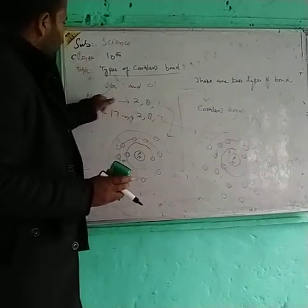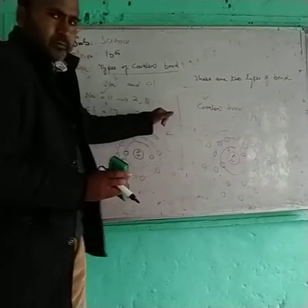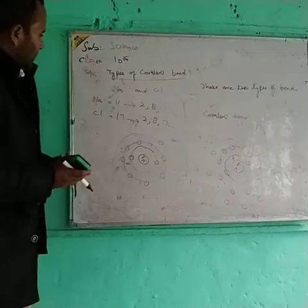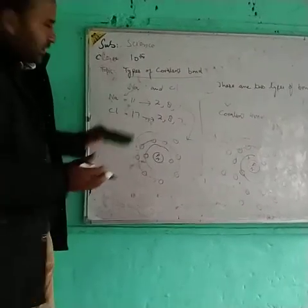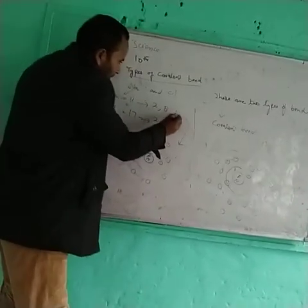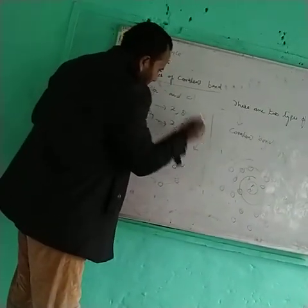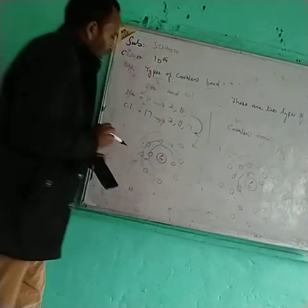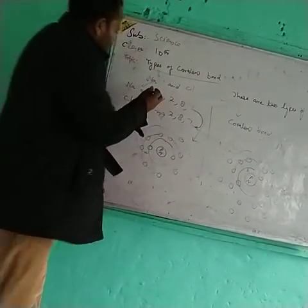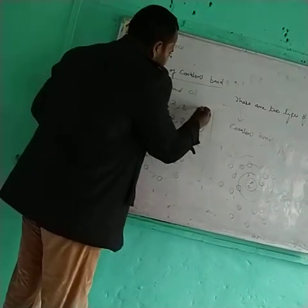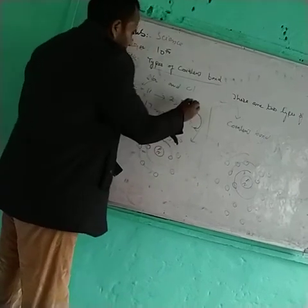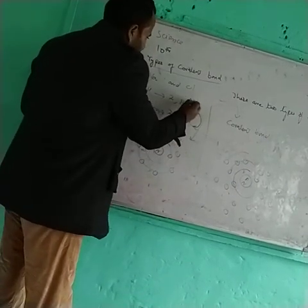So sodium needs seven electrons while chlorine needs just one. Here, transference of electrons takes place: sodium loses one electron and gives it to chlorine. Sodium, having lost an electron, becomes positively charged — Na⁺.